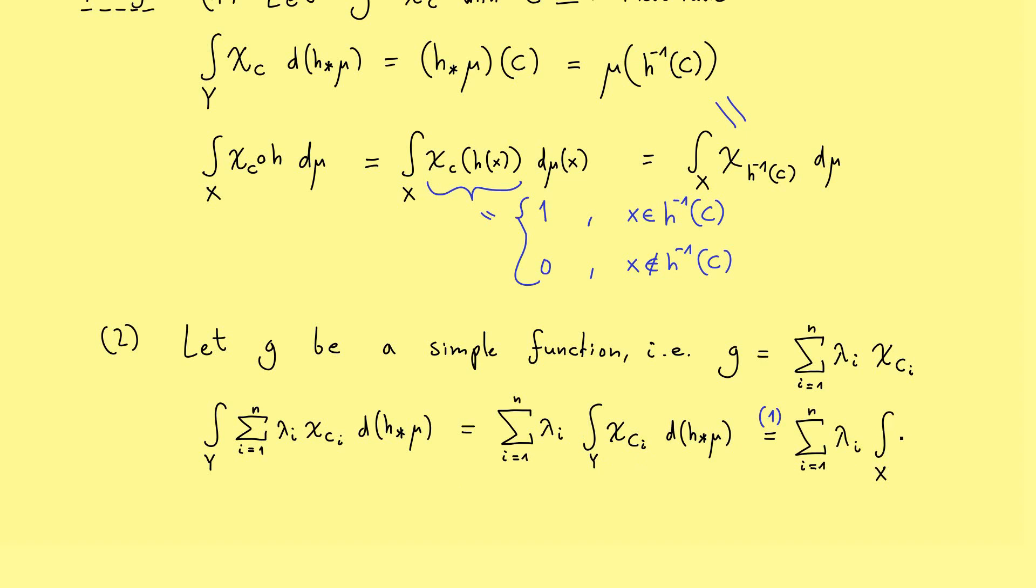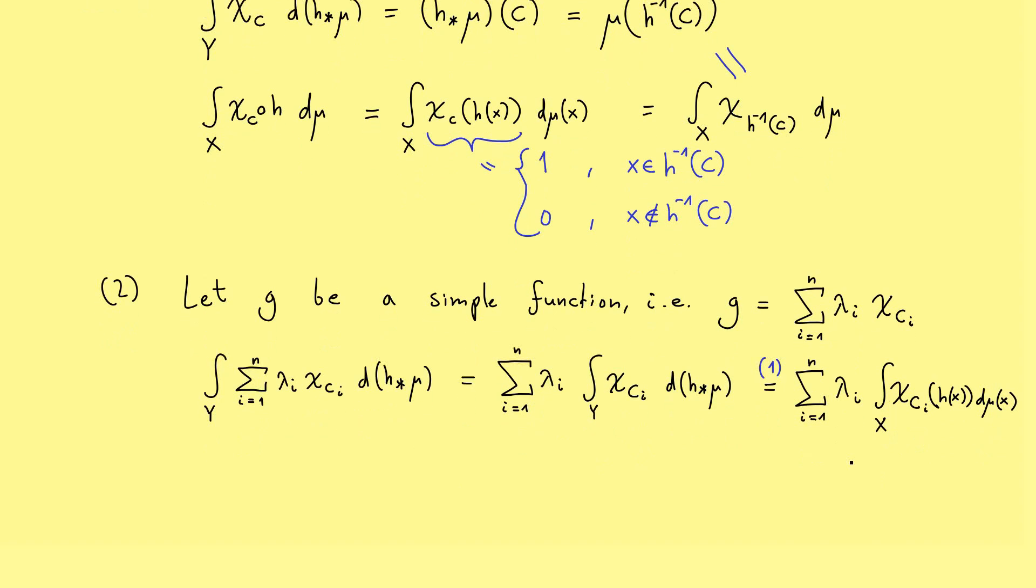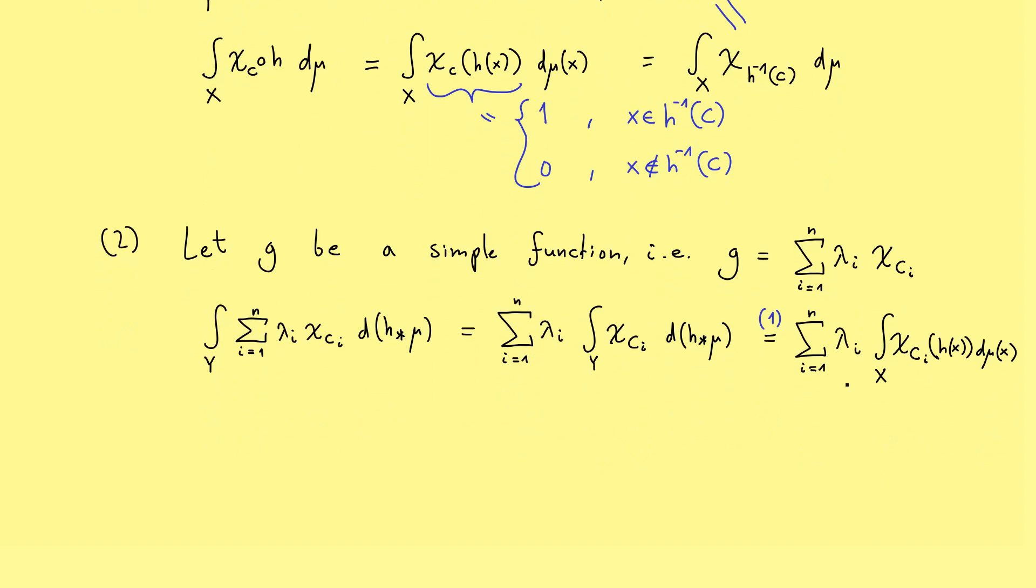And for this integral here, we can just use our first case 1. This means that we have here the integration over X and the characteristic function composition with h, so h(x), and then dμ(x). And of course, now we want to push the sum inside the integral again. And here I want to use parentheses and say, okay, we put in h of x, and here we have dμ(x).